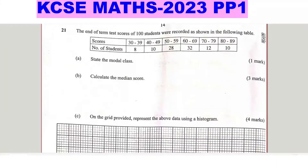Question 19, question 21. The end-term test scores of 100 students were recorded as shown in the following table. Scores and number of students are given. Part a: state the modal class. The modal class is the class with the highest frequency, and that is the class with a frequency of 42 students — that is 60 to 69. So that is the modal class.